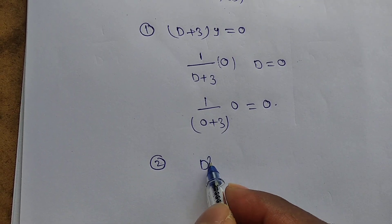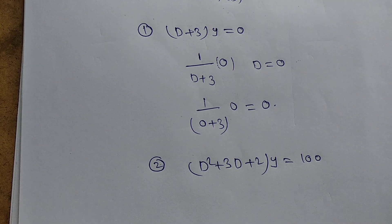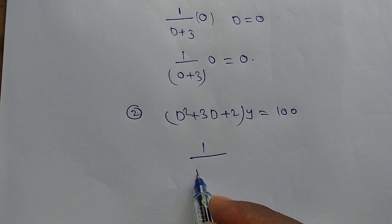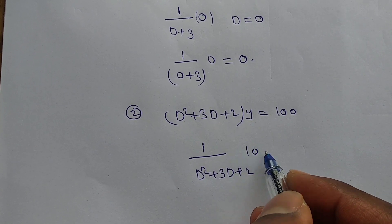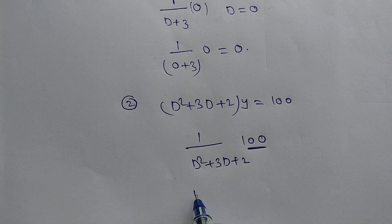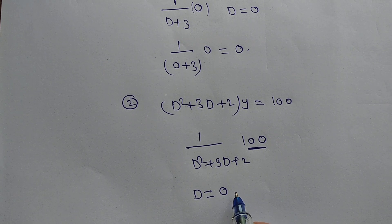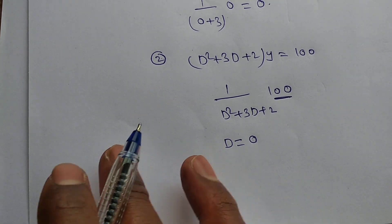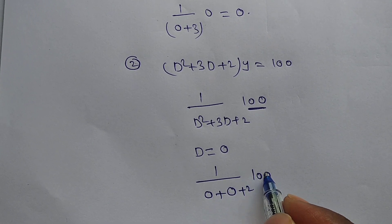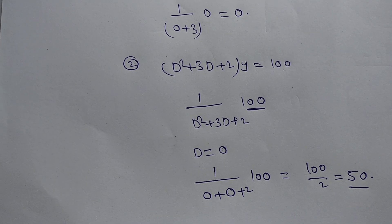Second problem: (D²+3D+2)·y = 100. The particular integral PI = 1/(D²+3D+2) · 100. Since 100 is a constant, we put D = 0 and D² = 0. That gives 1/(0+0+2) · 100 = 100/2 = 50. So the particular integral is 50.